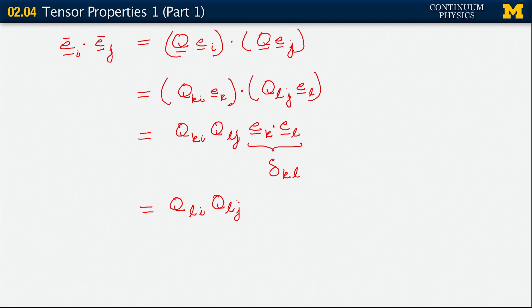And then what happens is that this delta k l acts upon one of these two components. Let's suppose it acts upon the q k i. It converts that to q l i and q l j stays the same. But now we know exactly what this is. On the previous slide of this segment, we defined q l i q l j to be delta i j. And then we bring down what we had on the left-hand side. We see that indeed, e_i bar dot e_j bar gives us delta i j.